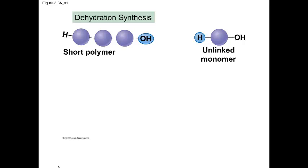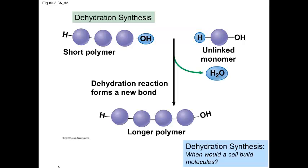Dehydration synthesis is the reaction that builds polymers. In this example, we can see the short polymer made up of three monomers, and by adding the fourth through the functional groups, which will ultimately lead to water, we can build and link that monomer to the building polymer. So, when in the cell would we want to build molecules? This will be one of the review questions.